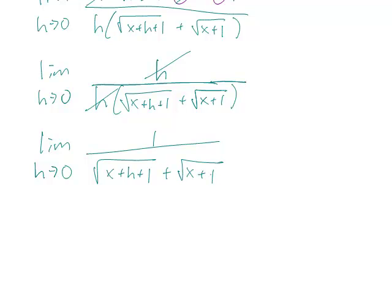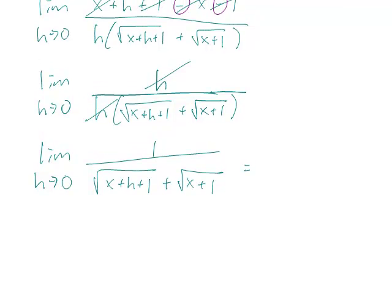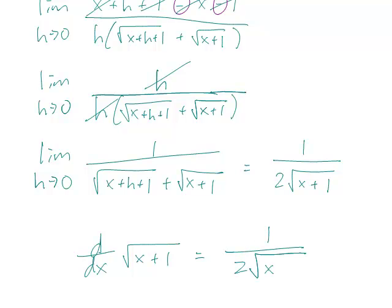And when you plug in h equals 0, you'll get 1 over 2 square root of x plus 1 on the bottom, which means that the derivative of the function square root of x plus 1 is equal to 1 over 2 square root of x plus 1.